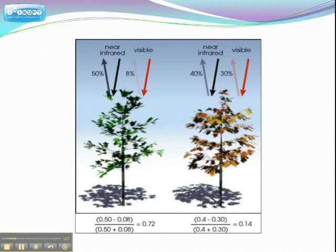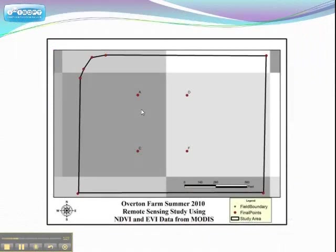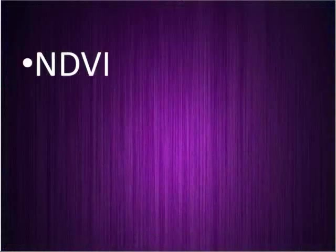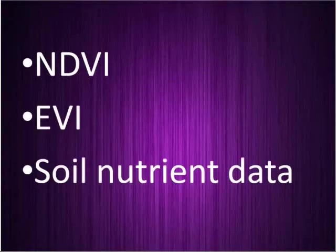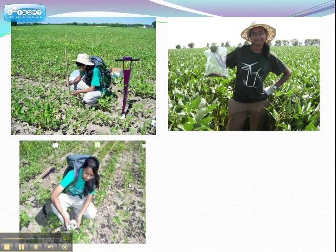EVI thus provides a better estimate of greenness. During my research, I collected soybean leaf samples from my 40-acre field on a regular basis from four field points using a GPS instrument. I analyzed the leaf samples for chlorophyll content as an indicator of plant health. I also collected NDVI, EVI, and soil nutrient data, and measured plant height and soil moisture content at those field points during the same visit.